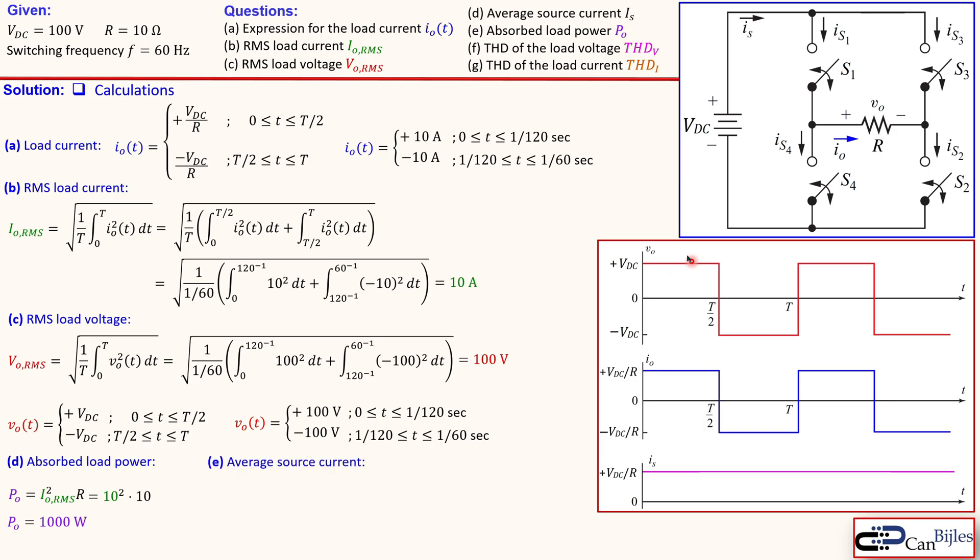The next one is the average source current which is this current here. And it must be in this case of course 10 amps. But that can be also done using the power balance because the power in must be equal to power out for ideal case. So if we don't have any dissipation elsewhere. Then we know the power in is from the DC source which is then DC voltage source times the average source current which is also the DC value that's actually shown here is equal to the absorbed power which is the P_O determined in question D. Now we rewrite this as I_S is equal to P_O over VDC. That will be then 1000 over 100 is equal to 10 amps as we have expected.